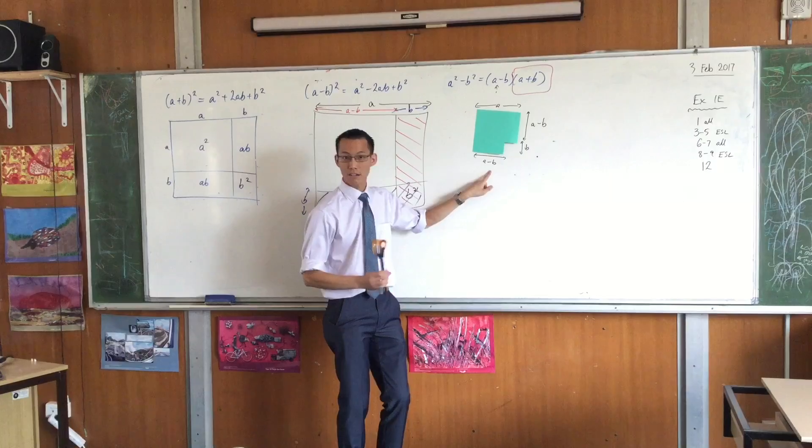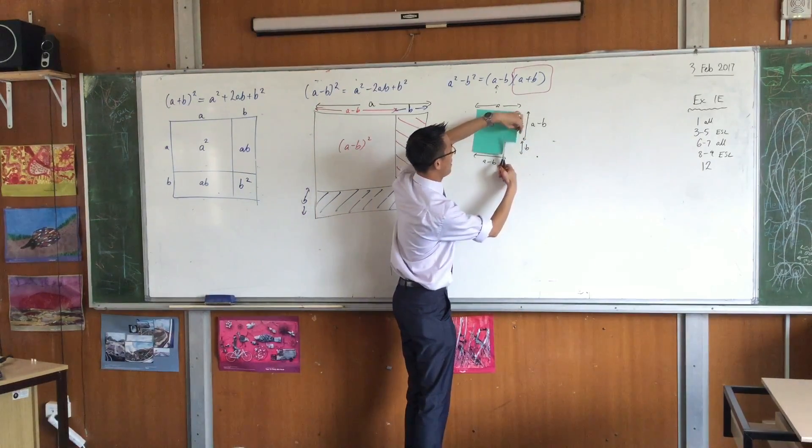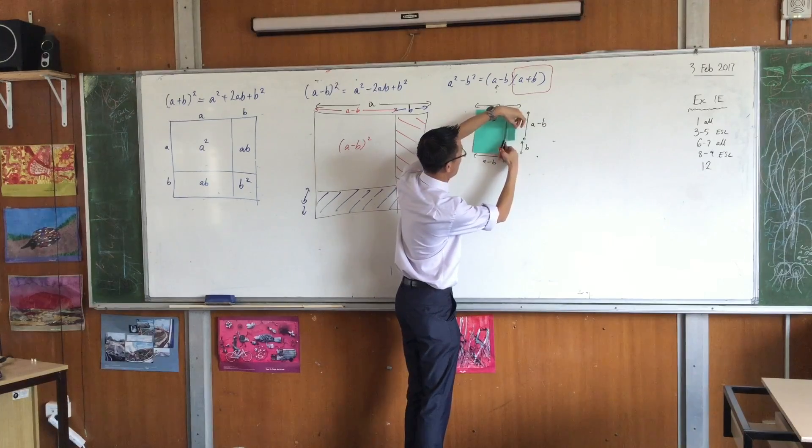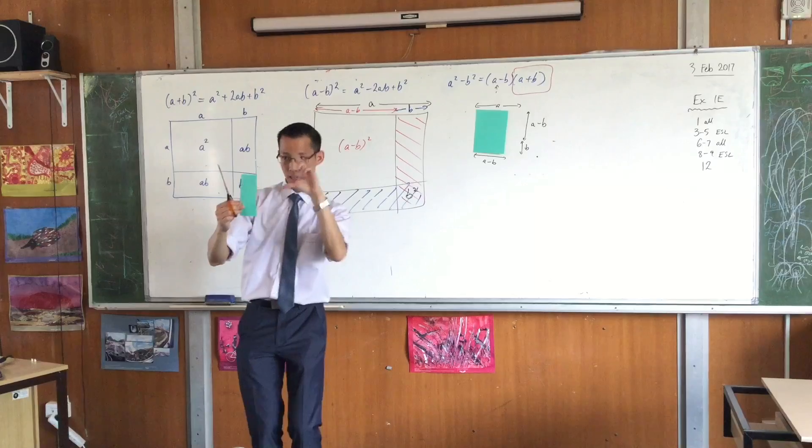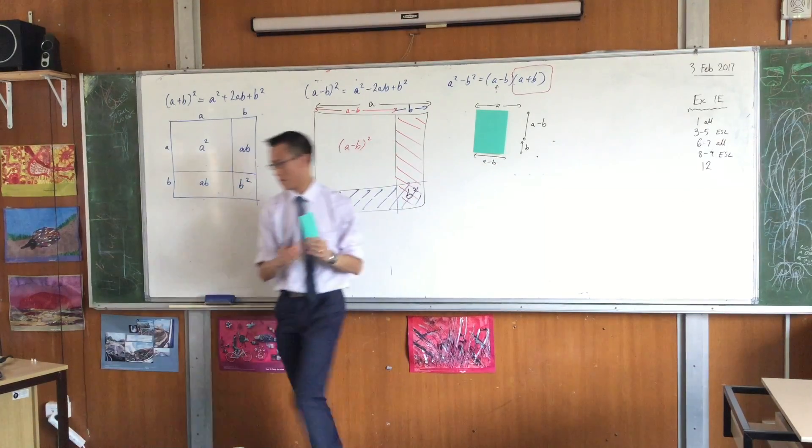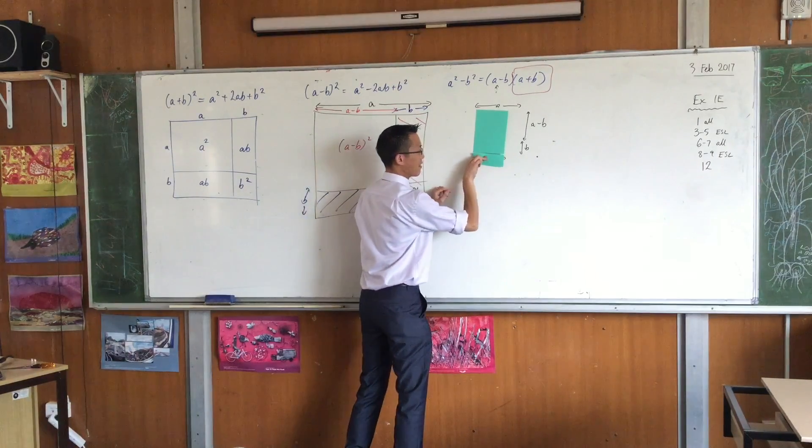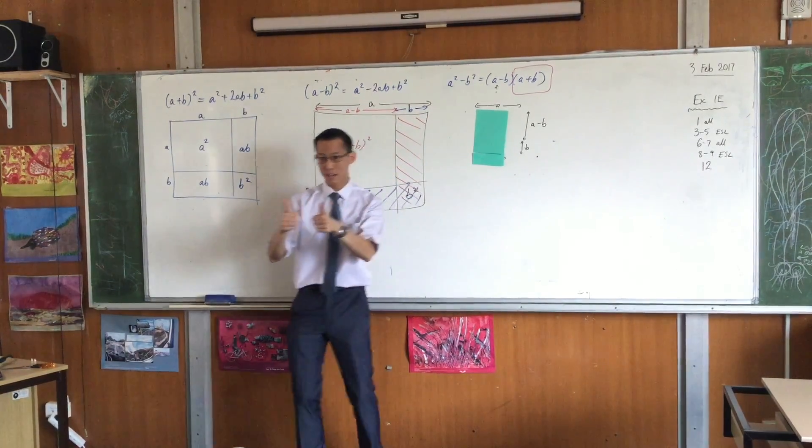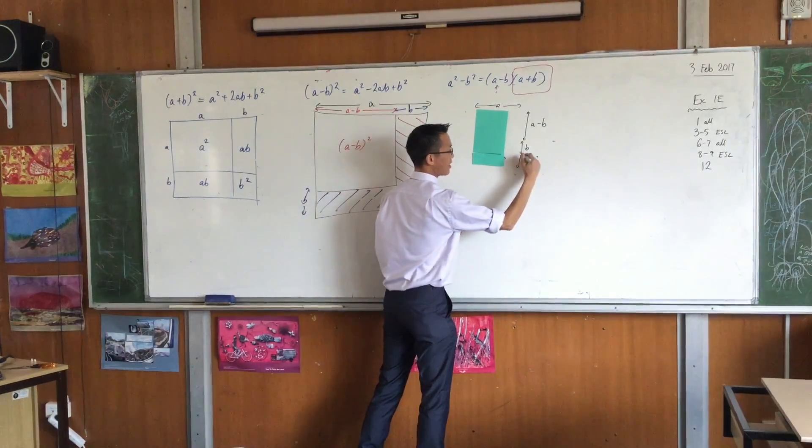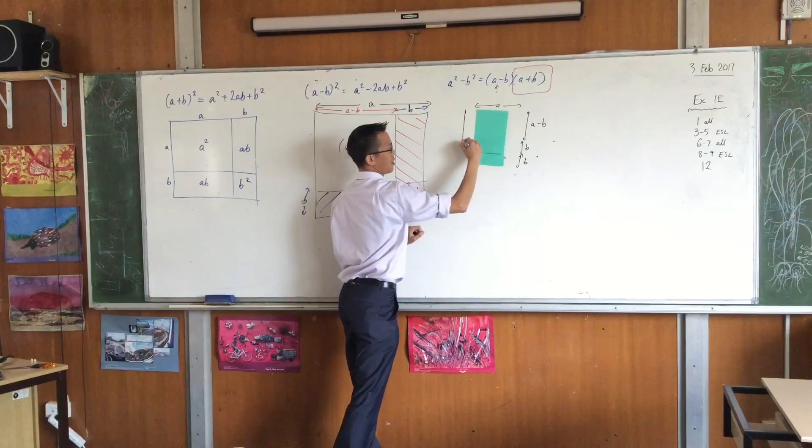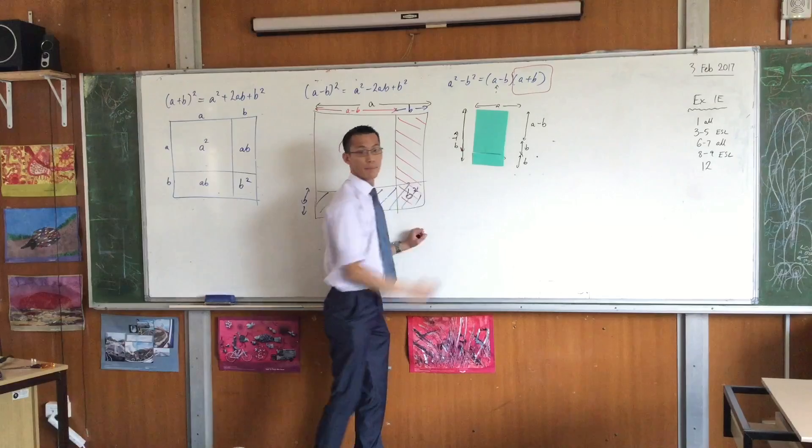So a minus b down here, right? This is also a minus b. So do you agree that if I slice this part off, this height is the same as that width. Do you agree? Yeah. Okay. So that means if they're the same, I can do that. Right? Yeah. What's that little height now? The new height? Because I turned it over. This height is also b. And what was this again? A. So here is a plus b.